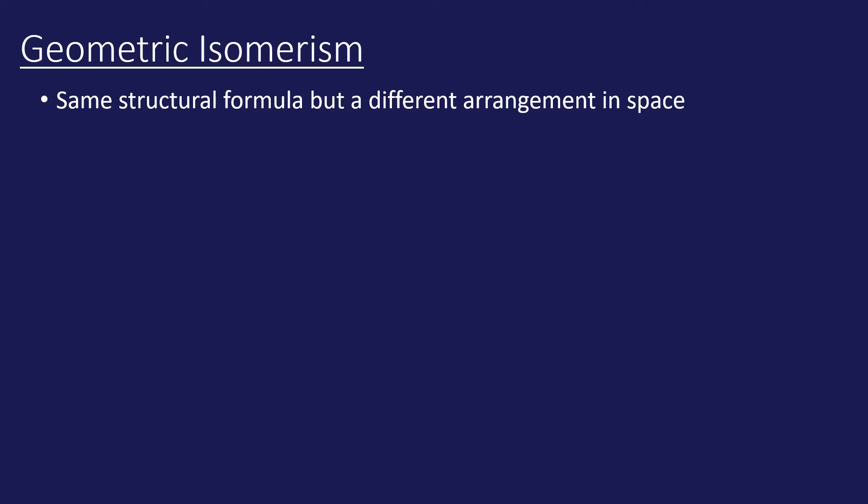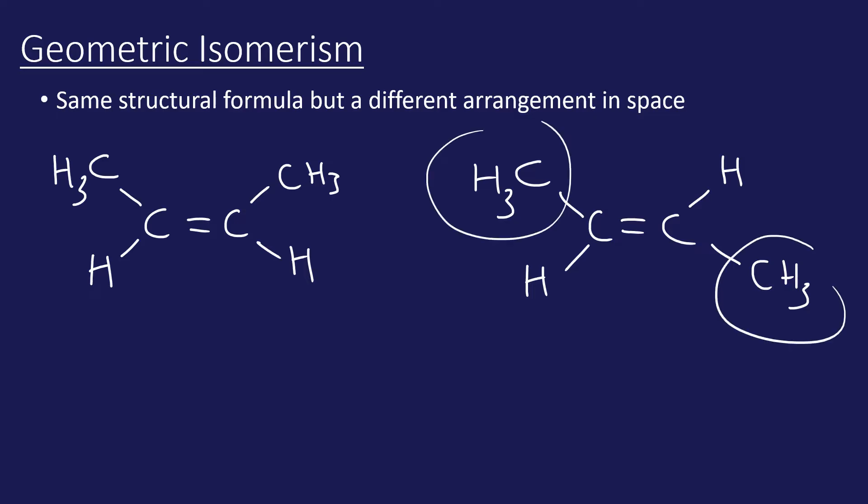Geometric isomerism is when we have the same structural formula but a different arrangement in space. The simplest example is but-2-ene—butene with a double bond between the second and third carbon. I'm going to draw but-2-ene on both sides. However, you can see that those two methyl groups are on opposite sides. On the right side, we have CH3 at the top and CH3 at the bottom. On the left side, we have both CH3 groups at the top. Because we don't get free rotation, this can't just rotate and be the same as the other one. They are definitely different; they are classed as geometric isomers.